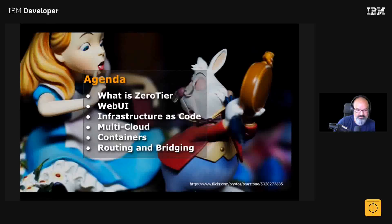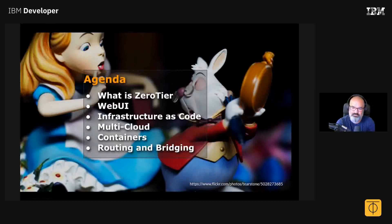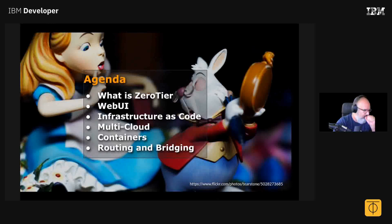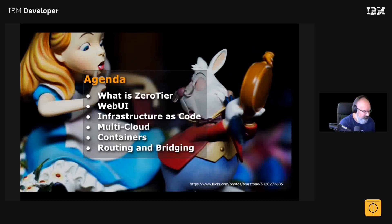Real quick, I'm going to go through the agenda — mostly for my benefit so I can keep my head screwed on straight. So: one, ZeroTier overview; two, we'll play in the web UI for a bit; three, we'll talk about infrastructure as code capabilities; four, multi-cloud; five, containers; and we'll do some networking because it is a networking product.